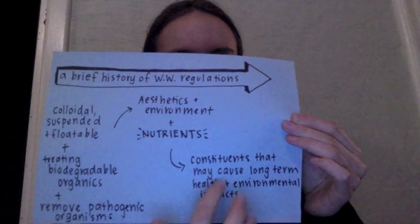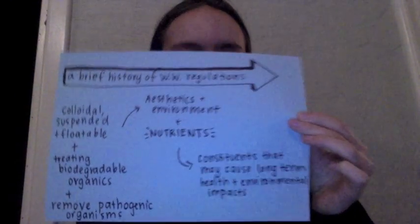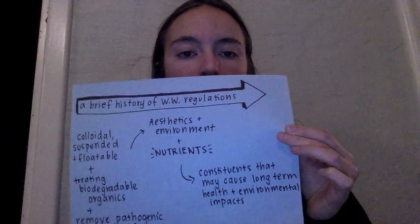The removal of nutrients such as nitrogen and phosphorus also rose in importance. Nowadays, the emphasis is on constituents that may cause long-term health and environmental impacts. I think that the changes in regulation have come about because people have an increased awareness of the environmental effects caused by wastewater discharges. For example, here in Perth, we hear a lot about the detrimental effect that wastewater has on our environment through the media when discharge overflows into the Swan River.